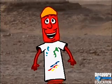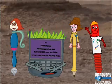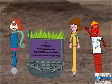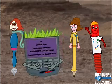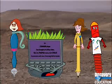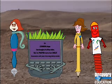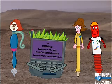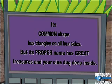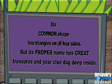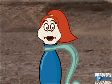Me! Ooh, pick me! Someone want to read this one? Anyone? Come on, Buzz. Please. Fine, but no berets. You've got no sense of the dramatic. And you've got no sense of time. Its common shape has triangles on all four sides, but its proper name has great treasures and your clue dug deep inside. This desert heat has gotten to Dark Marker.